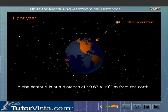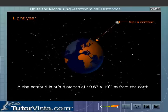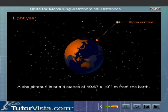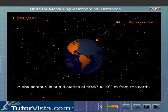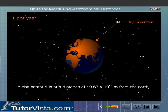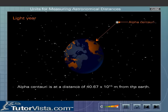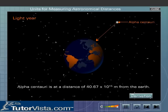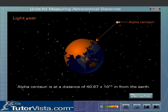In other words, Alpha Centauri is at a distance of 40.67 into 10 to the power 15 metres from the Earth. Remember, lightyear is a unit of distance. Click on the link provided to view the derivation.